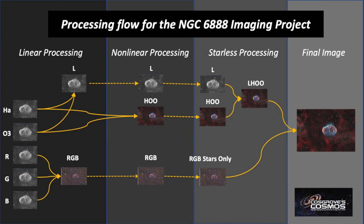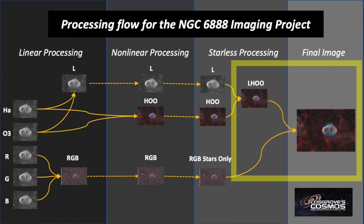Now that we've created our RGB stars, we're ready to take on the final phase. In this final portion, we'll be concentrating on taking our starless luminance image and folding that into the HOO color starless image. At that point, we'll do the final series of processing getting that color image ready for the reintroduction of stars. Once we've completed that processing, we will bring the stars back in and end up with our pretty much final image.